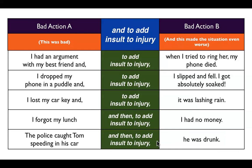So that's how you build the sentence. Just say bad action A, then say 'to add insult to injury' or 'and then, to add insult to injury' — be careful about the commas. You'll notice the comma goes after 'and.' If you use 'then,' the comma will go after 'then,' and there will be a comma at the end also. Then you'll write bad action B.